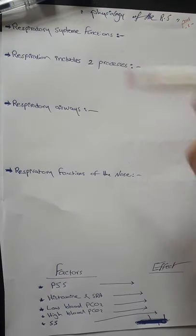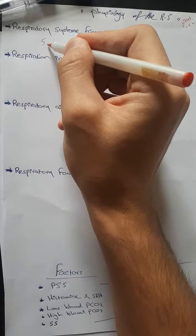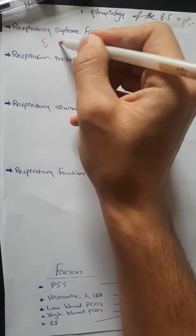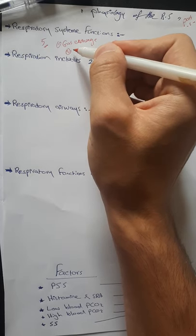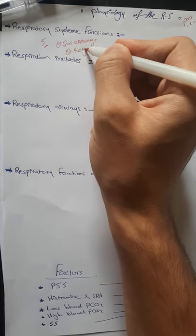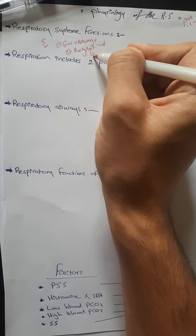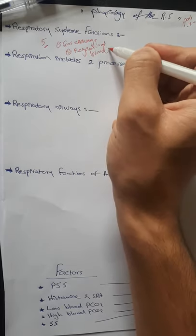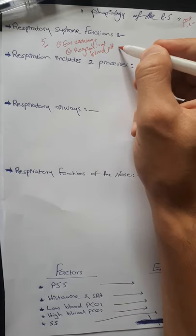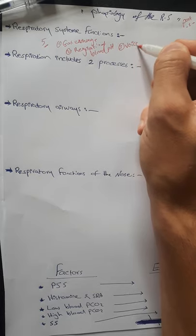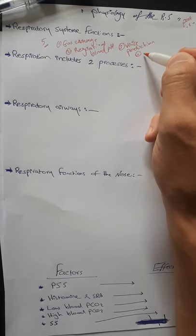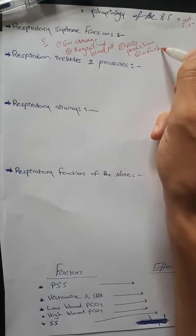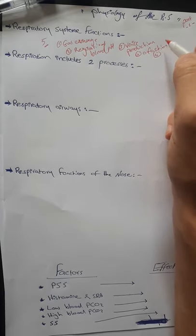In the respiratory system we have five functions: the first one is gas exchange; the second one is regulation of blood pH; the third one is voice production; the fourth one is olfaction; and the fifth one is protection.